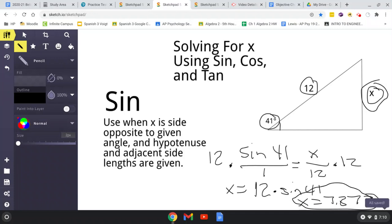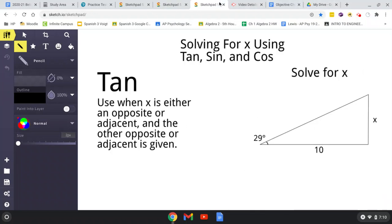All right. Now, moving on to the final trig function is tan. Now, you're going to use tangent when your hypotenuse is not x or given. But your x and given are the opposite and the adjacent. So, our given here is the adjacent. Our opposite is our x value.